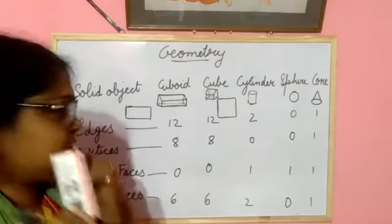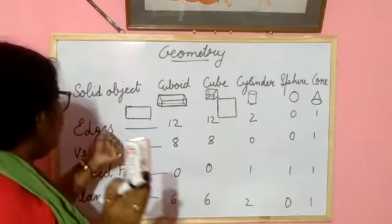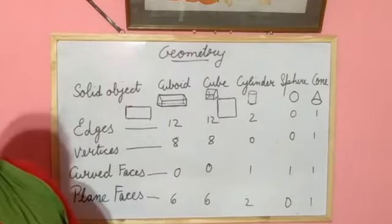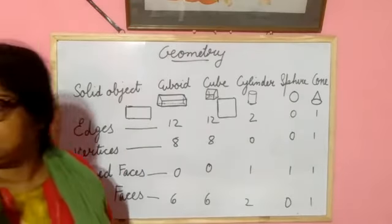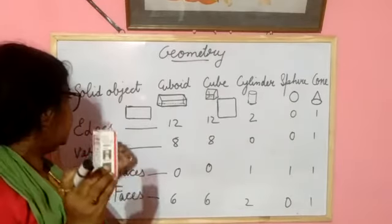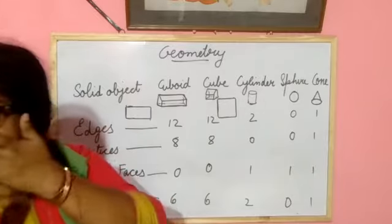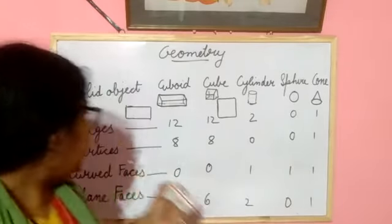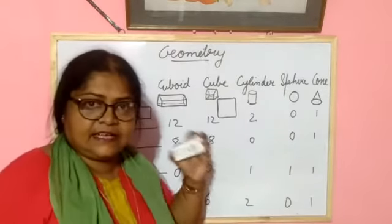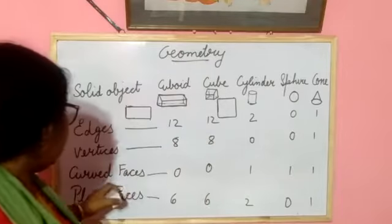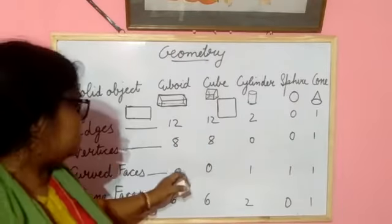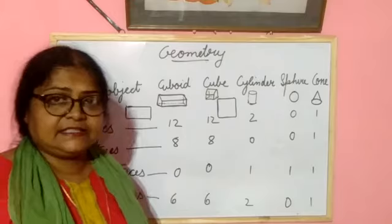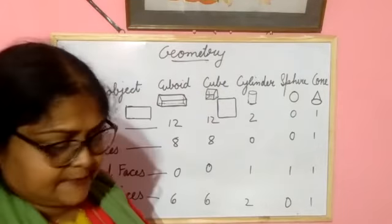In the cuboid, how many edges, vertices, curved faces, and plane faces are there? You are seeing 12 edges, 8 vertices, 0 curved faces, and 6 plane faces. Is that clear?